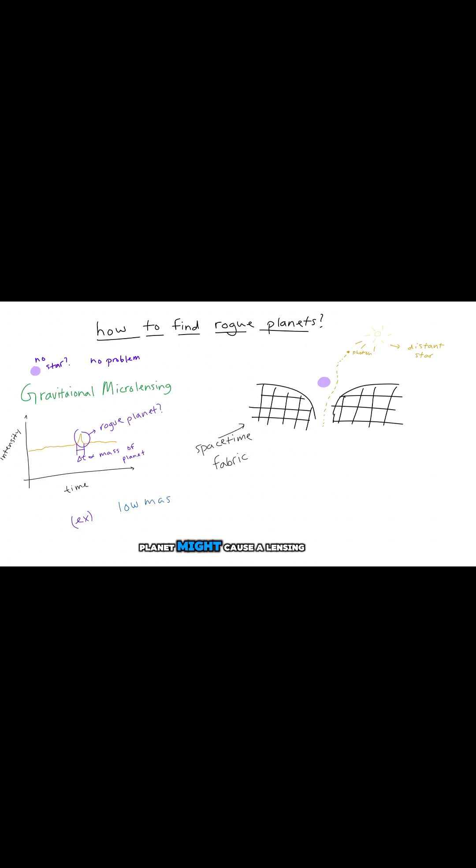For instance, a low-mass planet might cause a lensing event that lasts a few hours, while a more massive object could create an event that lasts days.